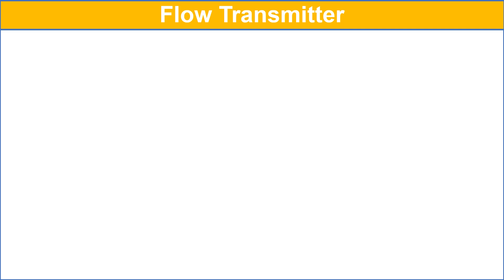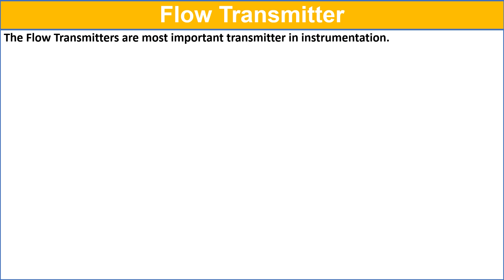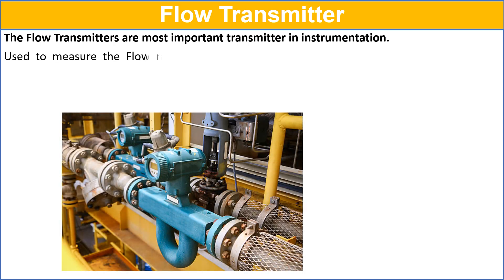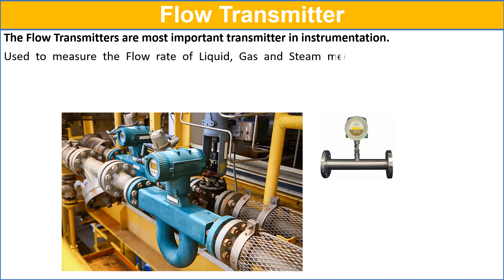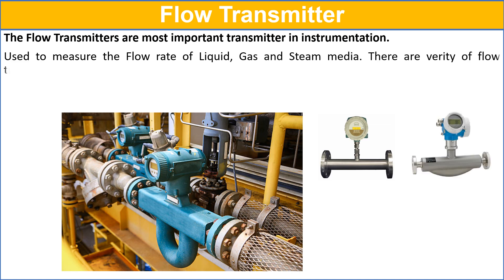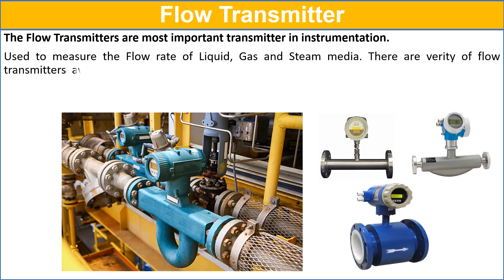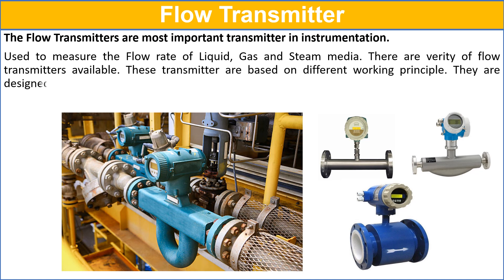Flow transmitters are the most important transmitters in instrumentation. They are used to measure the flow rate of liquid, gas, and steam media. There are a variety of flow transmitters available, based on different working principles, and they are designed according to various types of process applications.